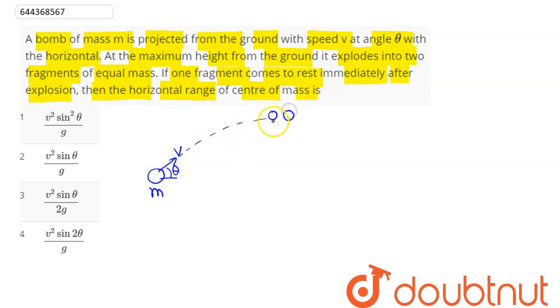it explodes into two equal masses m by 2 and m by 2. Now one mass comes to rest immediately, so it will land here at distance of r by 2.